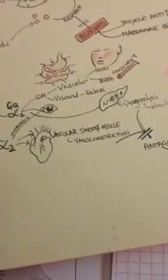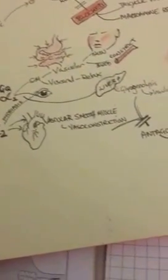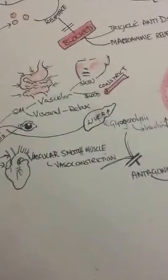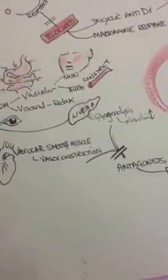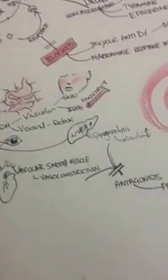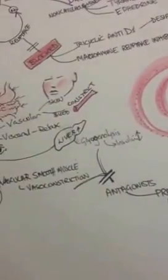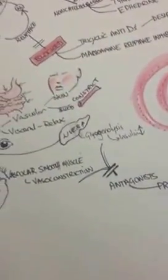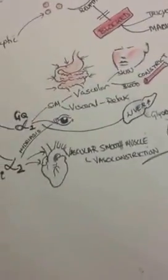So as you can see from this, you've got alpha two, which is involved with vascular constriction. So that causes, think about it, when you're nervous or excited, when you have to run away, your blood pressure goes up. And that's caused by the constriction of blood vessels and your skin flushes, right?